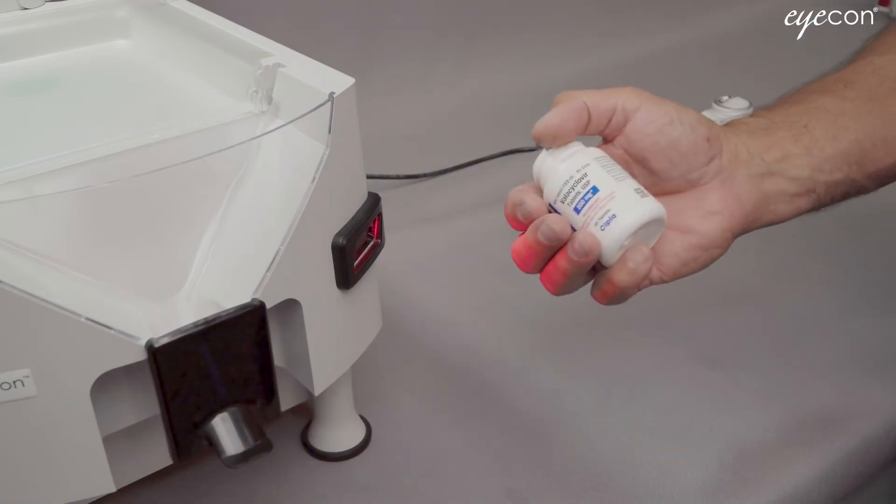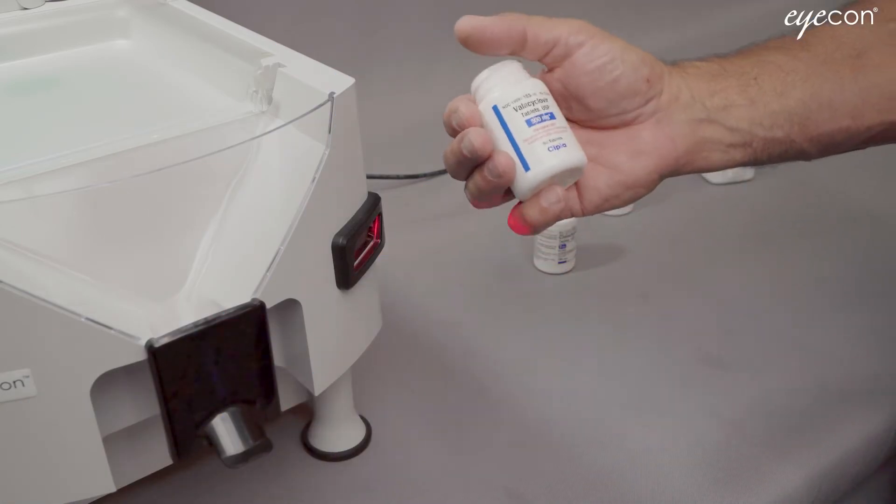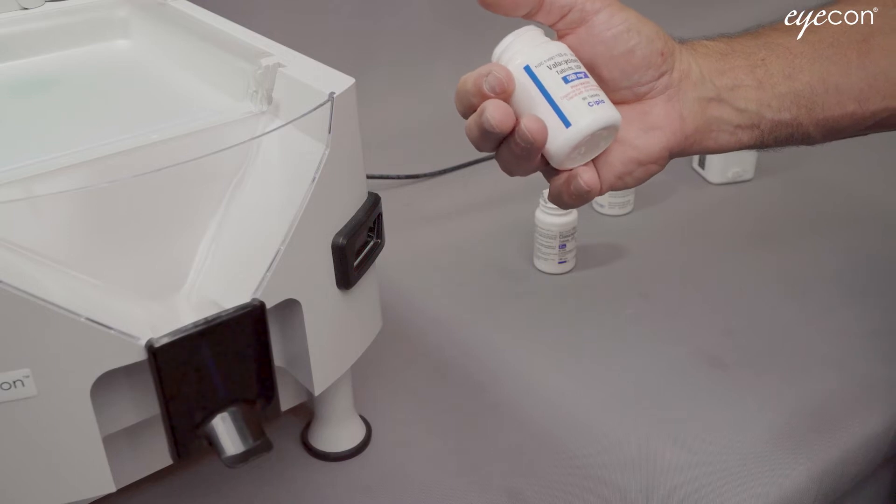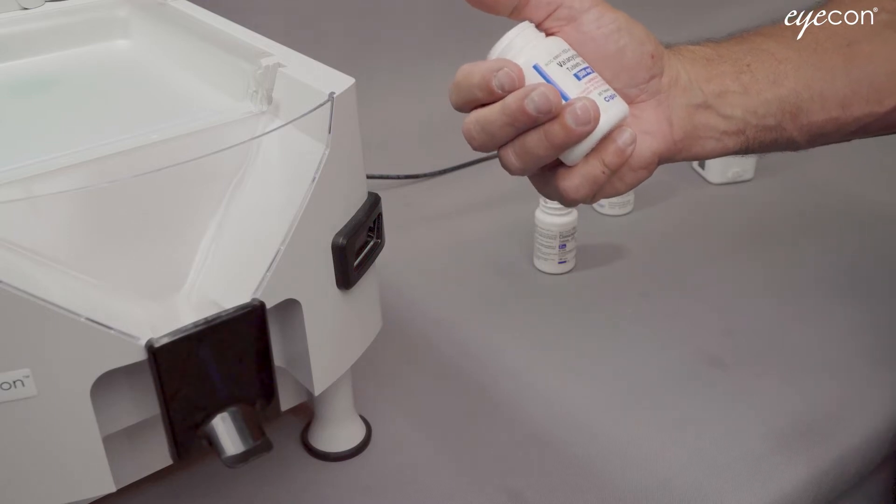Next I'd like to show you a few examples of the 2D barcodes that are being included on almost all of the manufacturer stock bottles being introduced to the market nowadays.